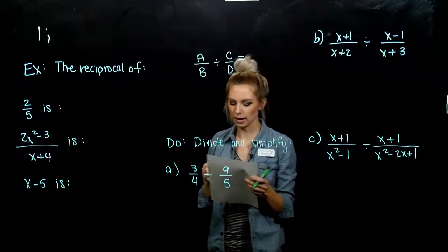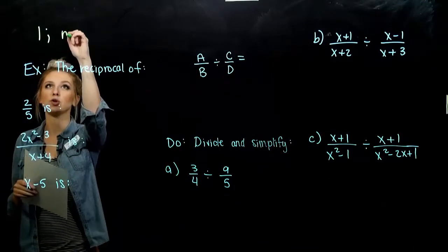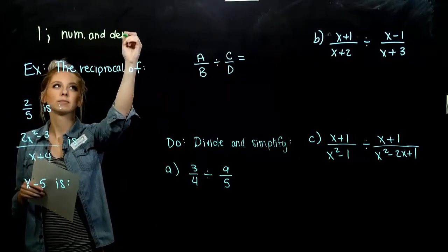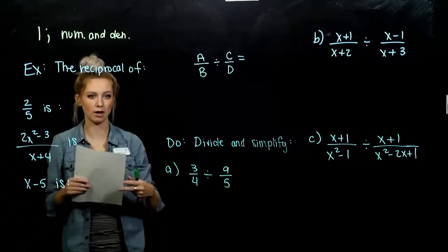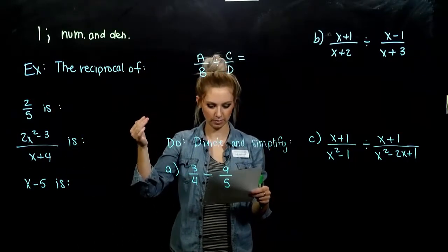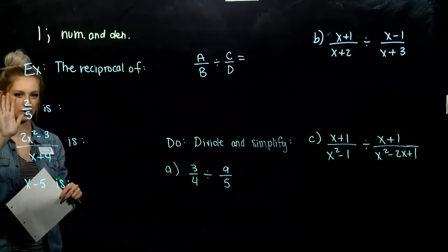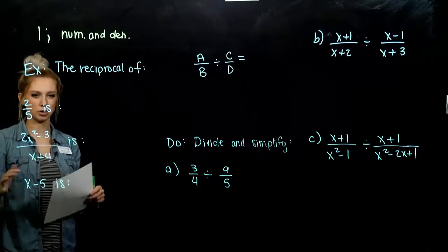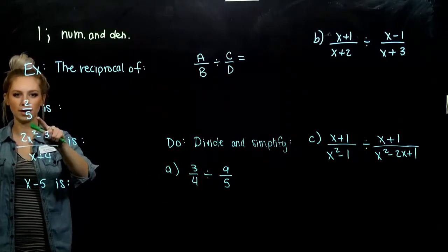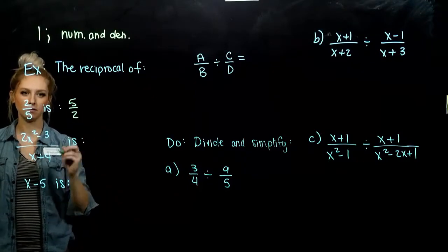So the reciprocal of a rational expression is found by interchanging the numerator and the denominator. We're flipping it upside down. What was up top is now down below. What's down below is now up top. So let's just run through a few of these simple cases. The reciprocal of 2/5 is what? Flipping it upside down. 5/2.